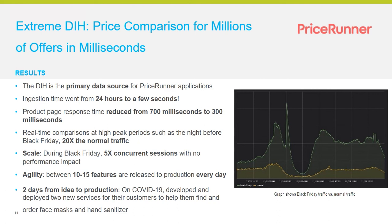This graph shows actual footage of PriceRunner's workload on a regular day versus Black Friday just one year ago. On Black Friday they had 20 times the normal traffic and five times more concurrent sessions, and performance was not impacted. The previous solution couldn't scale — now they have a solution that scales automatically based on workload while still keeping a 300 millisecond response time.